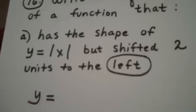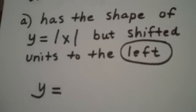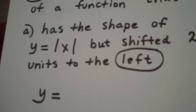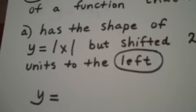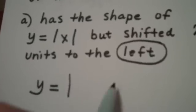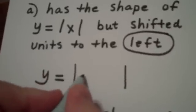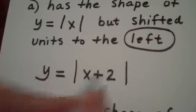that means that the x value is being affected. And one of the things that you need to remember, since we're shifting it two units to the left, whenever the x value is being affected, it does just the opposite of what you think is going to happen. So instead of x being inside the absolute value bars, we are going to have x + 2.